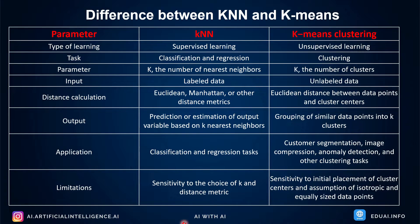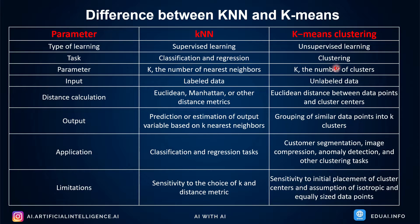Let me show you a simple comparison table. KNN is supervised, K-Means is unsupervised. The task of KNN is classification — and sometimes regression — while K-Means is for clustering. The word K is common to both, but means different things: in KNN, K is the number of neighbors to ask; in K-Means, K is how many clusters you want to form. The input for KNN is labeled data, whereas K-Means takes unlabeled data.